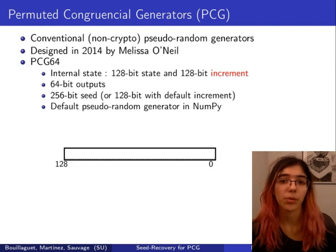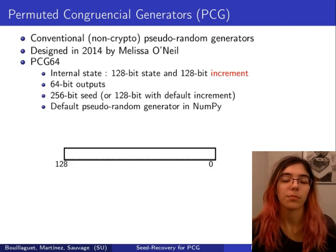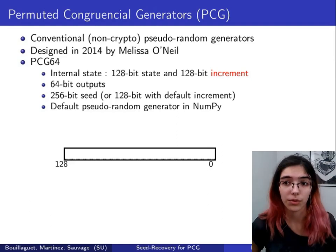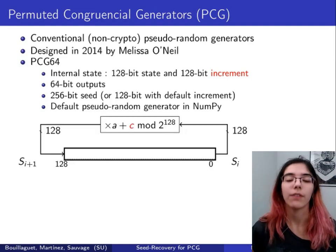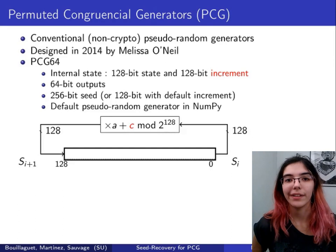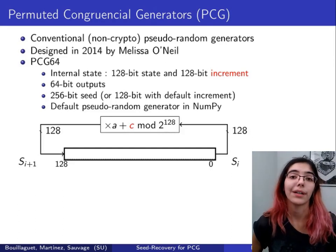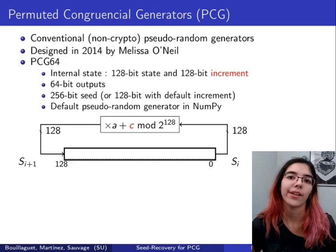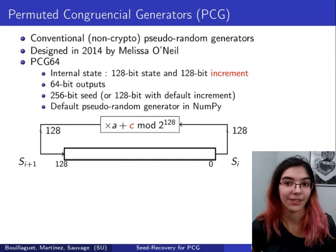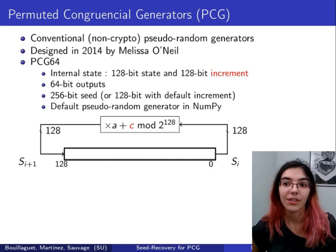So now I will present the algorithm of PCG. Each time the generator is clocked, the internal state is updated linearly. It's just multiplied by a constant A, and the increment is added to it.